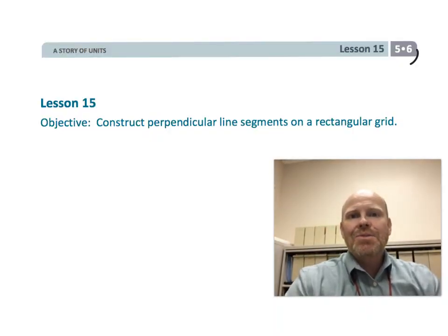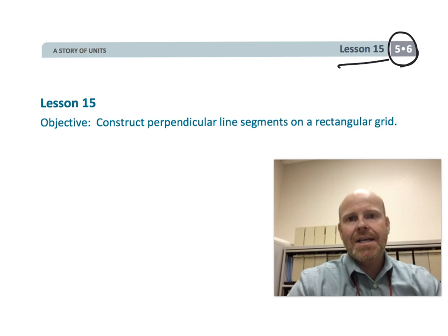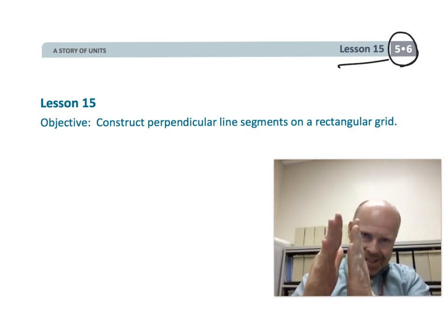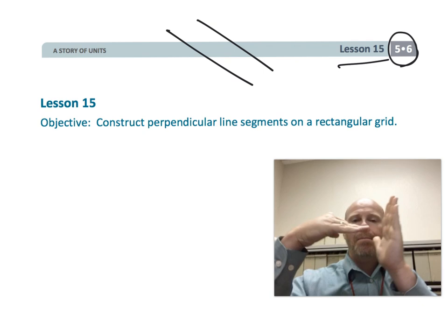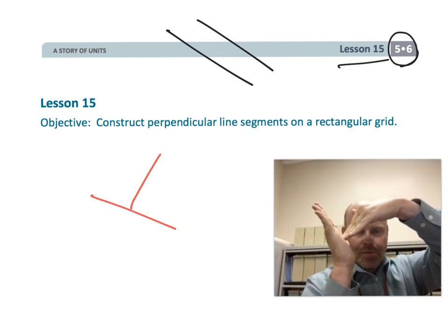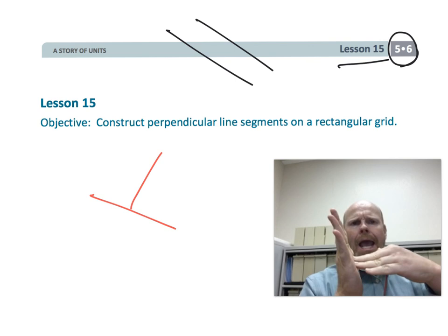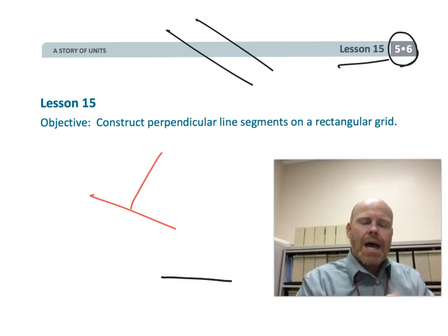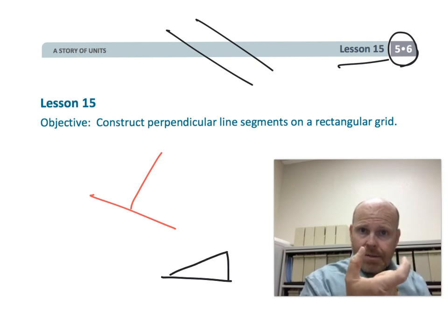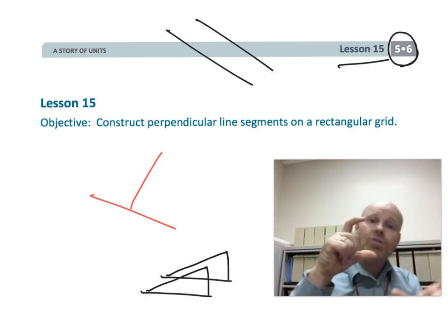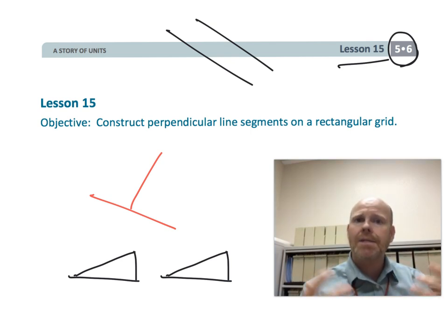This is fifth grade module six lesson 15. In this lesson we're moving from the previous lessons where we were talking about parallel lines. Now we're going to be talking about perpendicular lines — the idea being that perpendicular lines form a 90 degree angle. We're going to use our slope triangles from previous videos to construct and understand how to construct perpendicular lines. Let's get started.